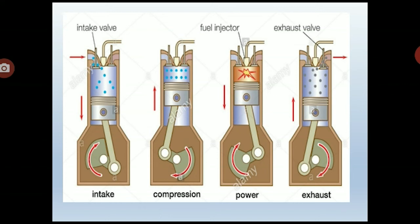The next stroke is the exhaust stroke. The combustion of fuel produces exhaust gases with high pressure and temperature. These gases are composed of unburned fuel particles and harmful pollutants like CO2, hydrocarbons, and NOx. In this stroke, the intake valve remains closed and only the exhaust valve is open. The upward motion of the piston and the pressure difference between the cylinder and atmosphere drives the exhaust gases out. These harmful gases are channeled through the exhaust system where a catalytic converter converts them to less harmful gases, and a muffler reduces noise before they are sent to the atmosphere.